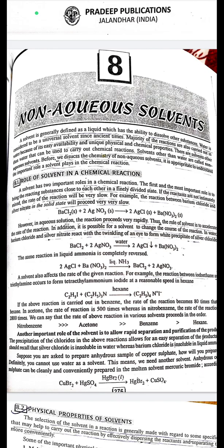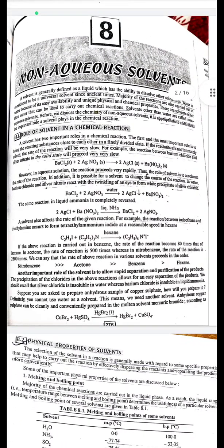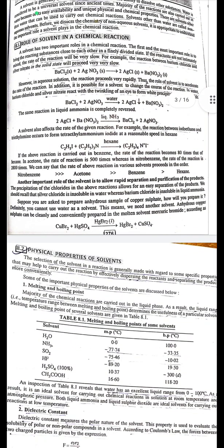Another important role of the solvent is to allow rapid separation and purification of the products. The precipitation of chlorides in the above reaction allows for easy separation of products. Silver chloride is insoluble in water whereas barium chloride is insoluble in liquid ammonia. Suppose you need to prepare an anhydrous sample of copper sulfate — you cannot use water as a solvent. Anhydrous copper sulfate can be conveniently prepared in the molten solvent mercuric bromide: CuBr₂ + AgSO₄ → HgBr₂ + CuSO₄.